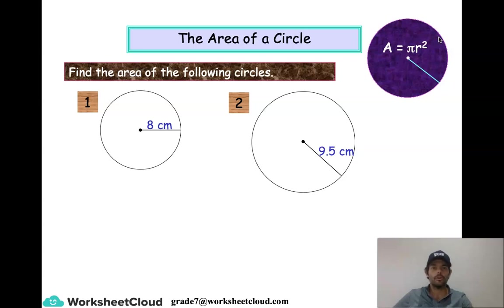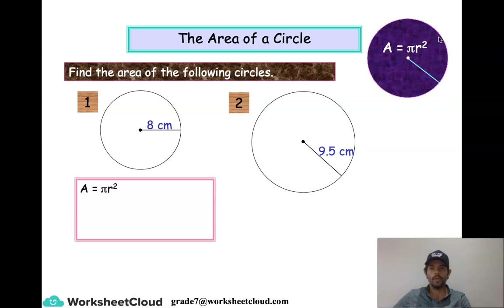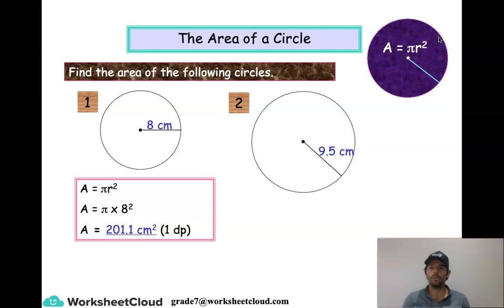The area of a circle uses the formula pi times radius squared. Remember pi can be found on your calculator, or we can use 22 divided by 7, or we can use 3.14. So pi times radius squared — that's 8 squared. We know we must square the 8 first, so it's pi times 64, and your answer will be 201.1 centimeters squared. Notice that the unit is in square units, and I've rounded off to one decimal place.